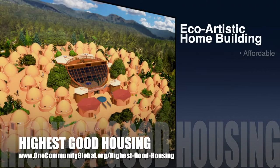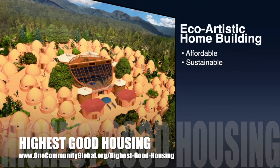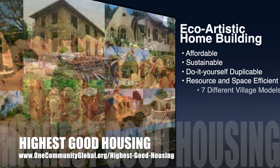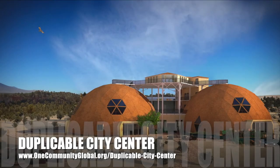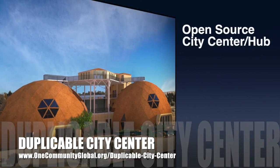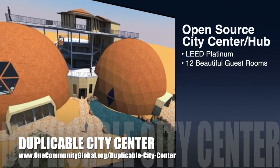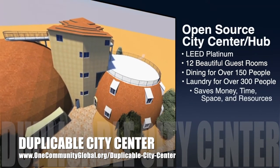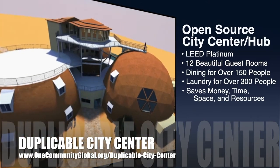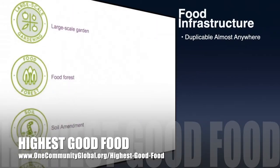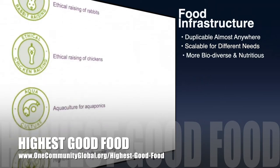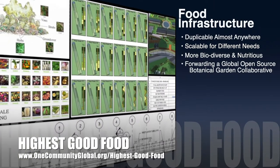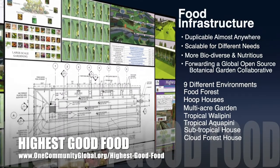One Community's approach to highest good housing is eco-artistic home building that is affordable, sustainable, do-it-yourself duplicable, resource and space efficient, and consists of seven different sustainably constructed village models. One Community is also creating an open source duplicable city center designed to be LEED Platinum certified, provide 12 guest rooms, dining for over 150 people, and laundry and recreation space for over 300 people, all while saving money, time, space, and resources. One Community's approach to highest good food is duplicable almost anywhere, scalable for different needs, more biodiverse and nutritious, part of forwarding a global open source botanical garden collaborative, and includes nine different free shared and duplicable growing environments.